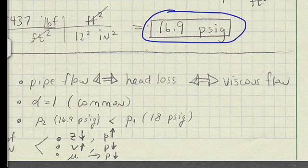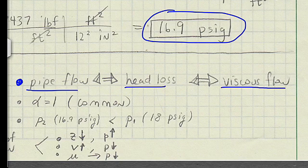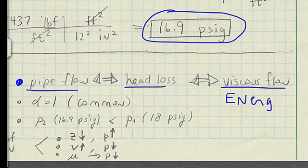Review the solution. Anytime you have pipe flow with head loss, this is a viscous flow, and you want to use here the energy equation. It's our main tool for analyzing these kind of problems.